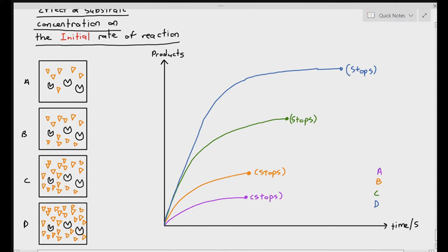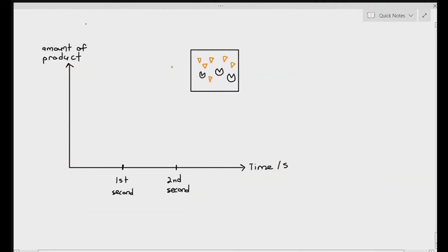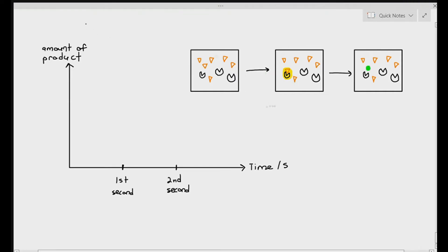If you wanted to compare the rate of reaction for all four experiments, comparing their initial rate of reaction is a fair comparison — it's the steepest part of the curve. In the first experiment, experiment A, in the first second, only one ES complex was formed because there was a low concentration of substrates. So the initial rate of reaction is one product per second, because within one second it only produced one product.